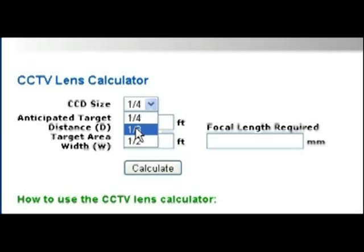In this case, we're going to use an example where the camera has a one-third inch CCD chip, and the anticipated target distance in this example that I'm going to be using is 15 feet. So we type in 15, and this is the distance that you expect your target to be at. This could be a subject or a person, whatever you want to look at. That's the distance they are from the camera.